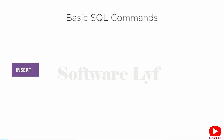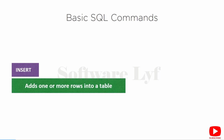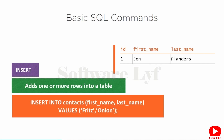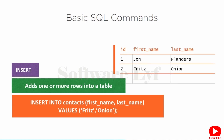Now let's talk about the INSERT command. The INSERT command adds one or more rows into a table. INSERT only works against a single table, unlike SELECT which can work against multiple tables. An INSERT statement might look like: INSERT INTO contacts (first_name, last_name) VALUES ('fritz', 'onion'). INSERT INTO is the actual command. We specify the table name and the columns inside parentheses, then specify a VALUES clause with the values we want to put into the table.